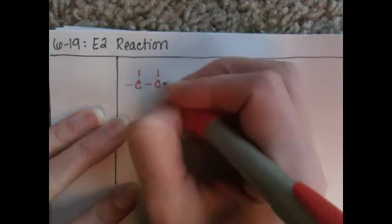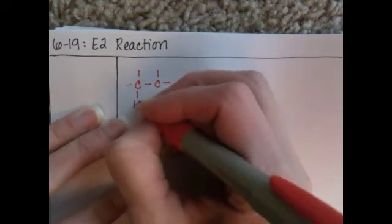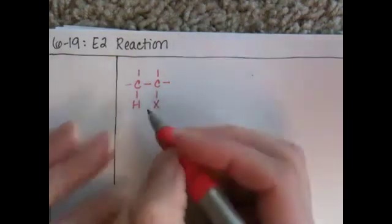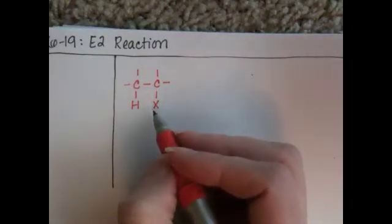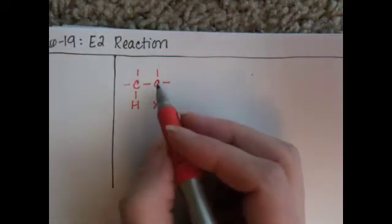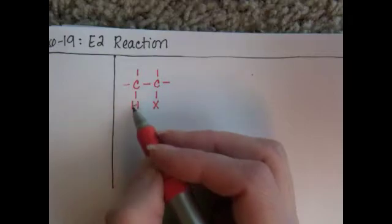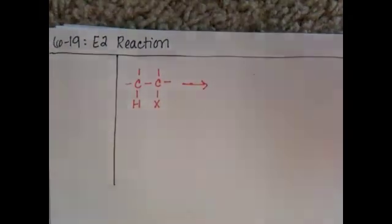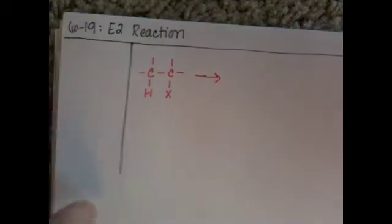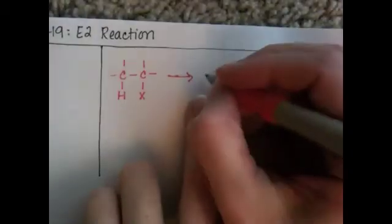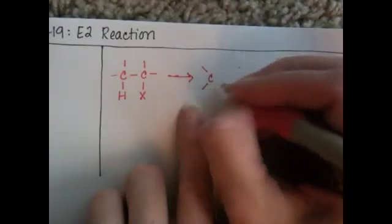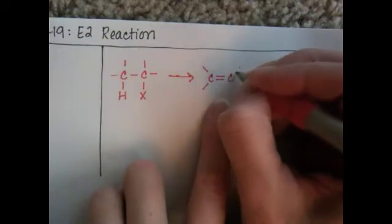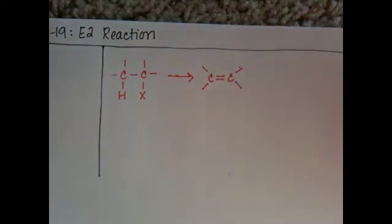In this reaction, just like with E1, you need to have at least two carbon atoms. One holds a leaving group, and you need to have an adjacent carbon with a hydrogen atom. This will produce an alkene, exactly like E1, and the loss of the leaving group and loss of the hydrogen.